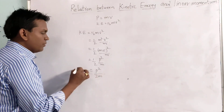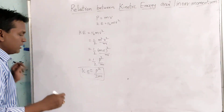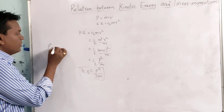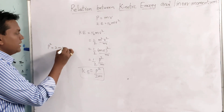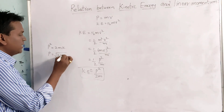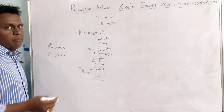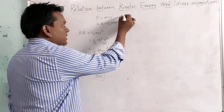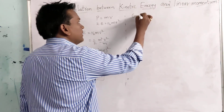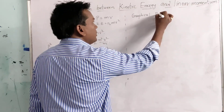So kinetic energy KE equals P squared by 2m. In terms of linear momentum, P squared equals 2mKE, and P equals the square root of 2mKE. Some problems will require these formulas. Now let us see the graphical representation of these quantities.